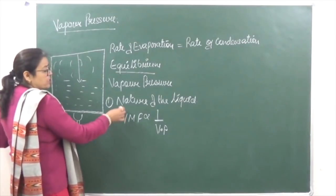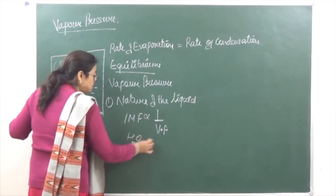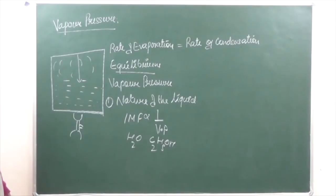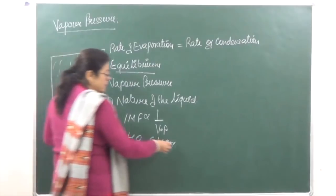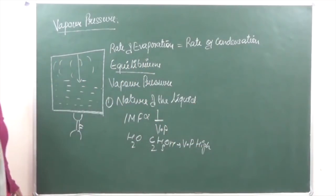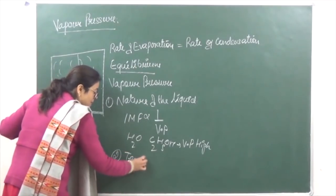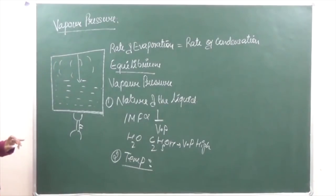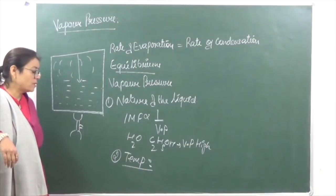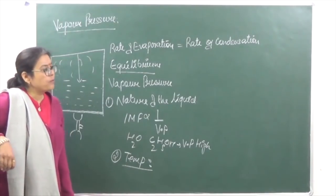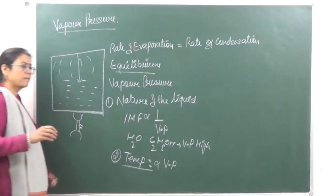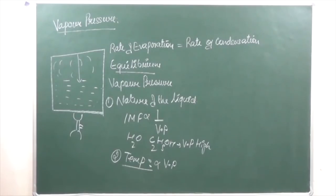The second factor is temperature. For example, take water or C₂H₅OH. We know that C₂H₅OH has weaker forces of attraction, so it will form more vapor and hence the vapor pressure in case of C₂H₅OH is going to be higher. As temperature increases, the intermolecular forces of attraction decrease and hence the vapor pressure increases — more vapors are formed. So temperature is directly proportional to vapor pressure.